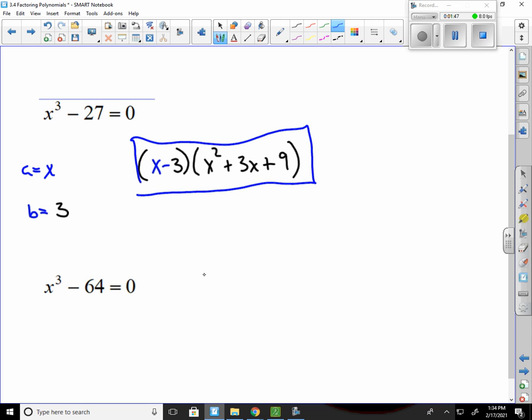Lastly, we have x cubed minus 64. 64 is the same as 4 to the 3rd, and then that would just be x, so it's going to be a minus b, so that's x minus 4. And then x squared minus ab, which would be 4x, and then it's going to be, whoops, sorry, that's a plus. And then it's going to be plus 4 squared, which is 16.